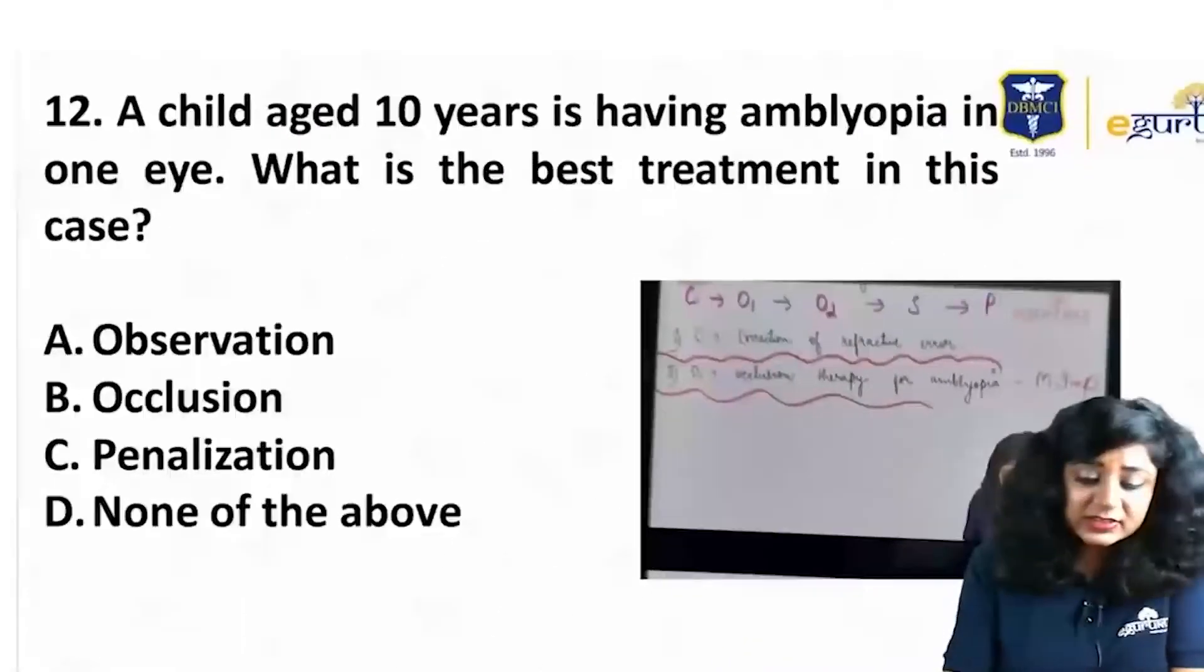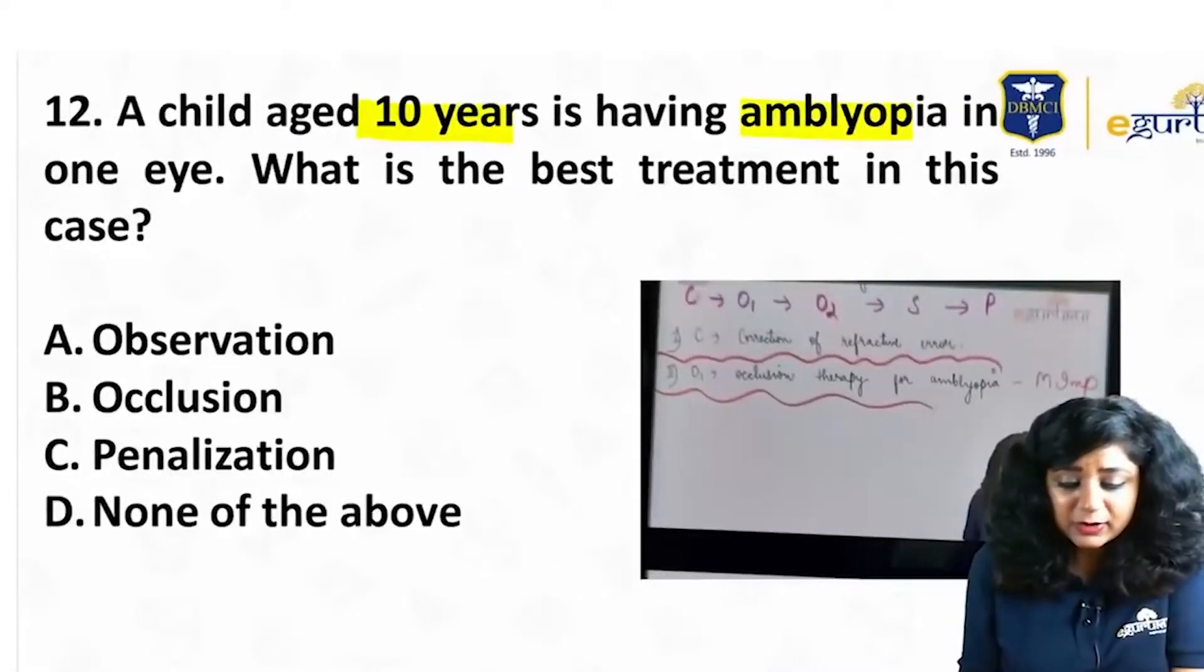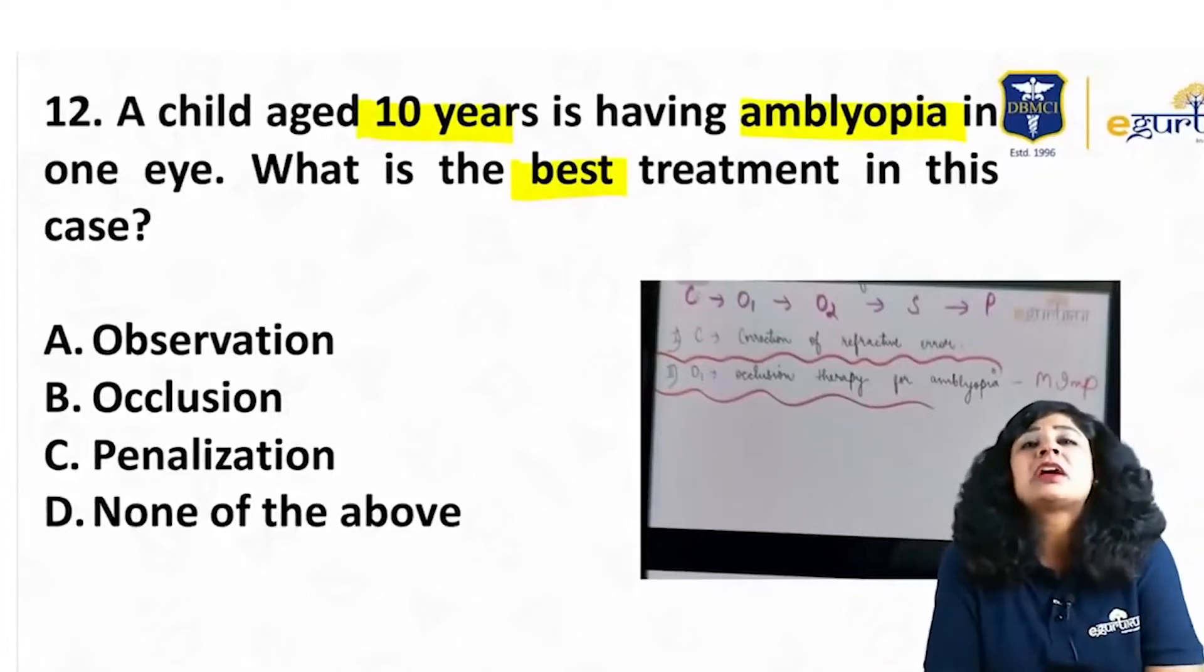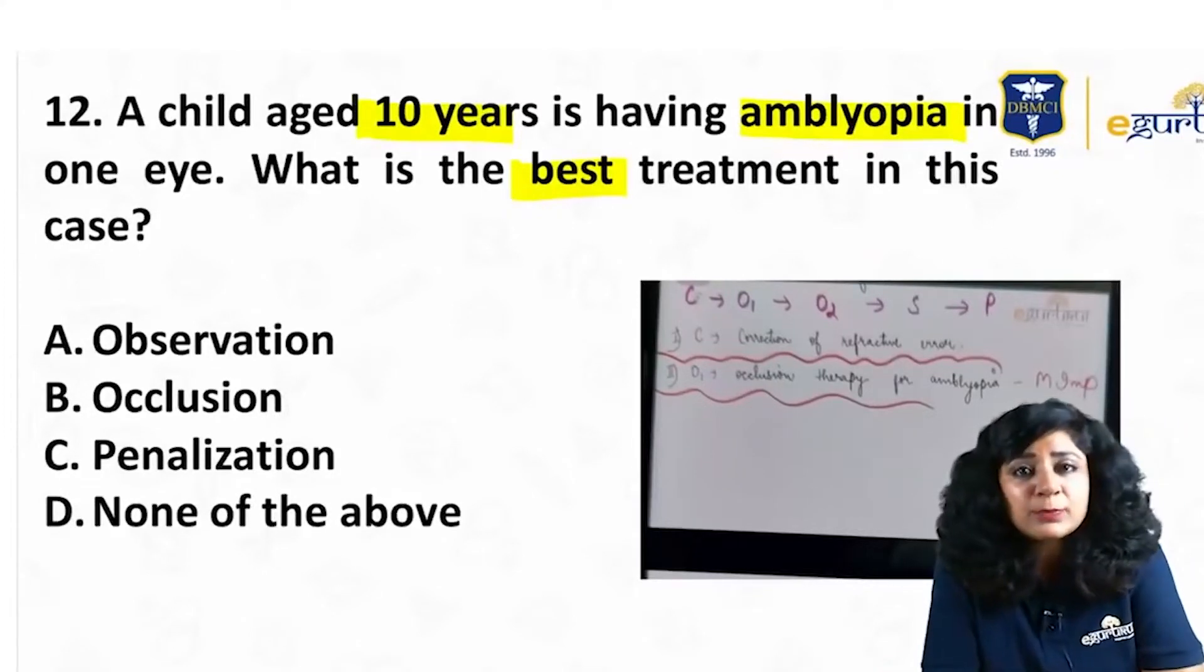The next question is about a child who is 10 years old and has amblyopia in one eye. They are asking for the best treatment. So again, it's a direct question asking you the treatment of choice for amblyopia.